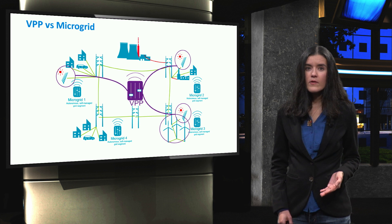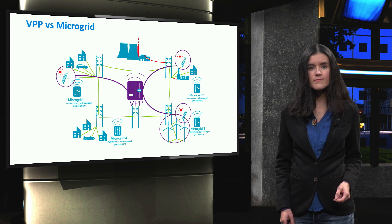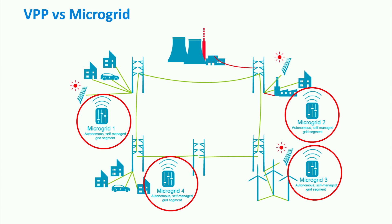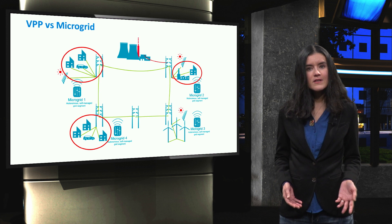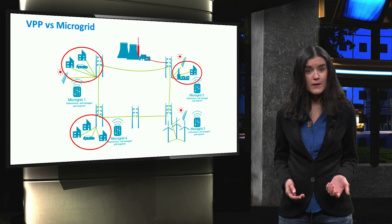The VPP aggregated production participates in traditional trading in normal energy markets. A second factor to take into account is size. The installed capacity of a microgrid is typically quite small, going from a few kilowatts to several megawatts, whereas a VPP can have a much higher power rating. A third important aspect is customer involvement. In a microgrid, the focus is on satisfaction of local consumption, while virtual power plants consider consumption as a flexible resource that can be traded in the energy market.